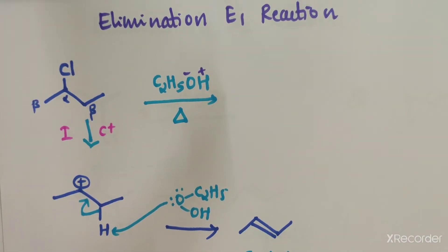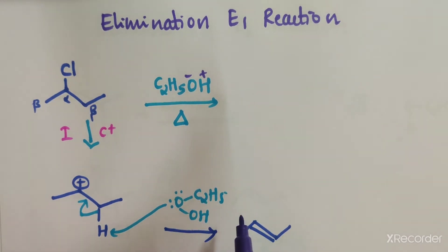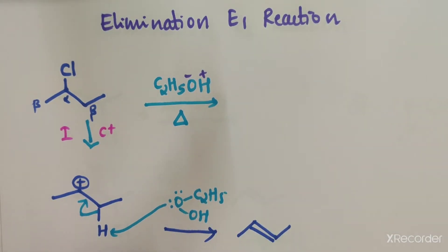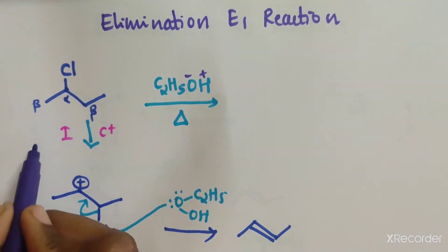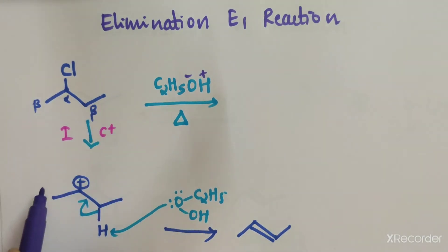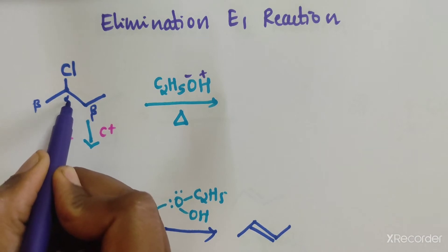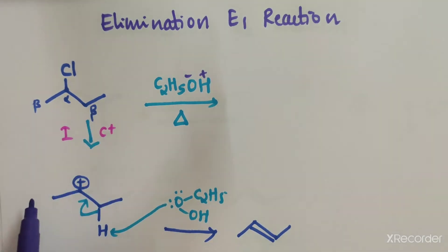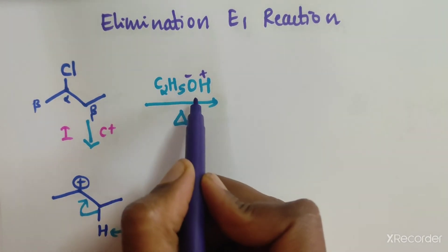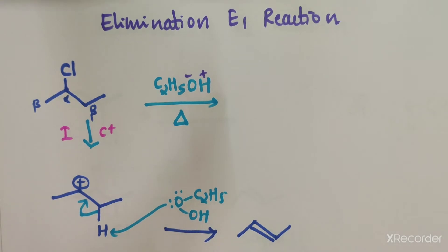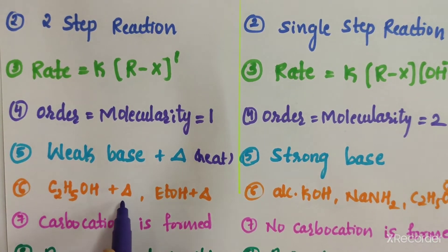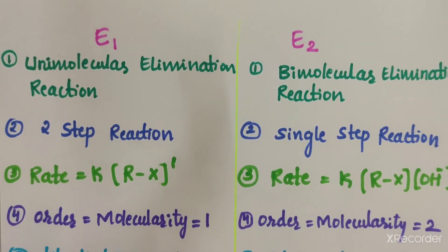Now we will solve some examples. The first example is an E1 elimination reaction. The reaction condition is C2H5OH under heating condition. We identify the alpha and beta carbons — this is beta, this is also beta, and this is also beta.